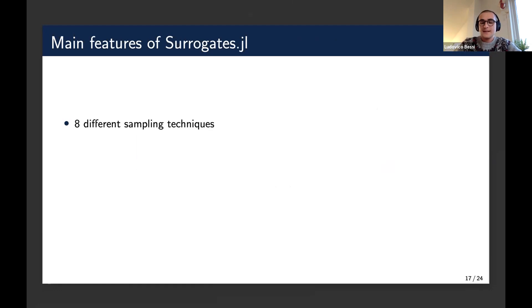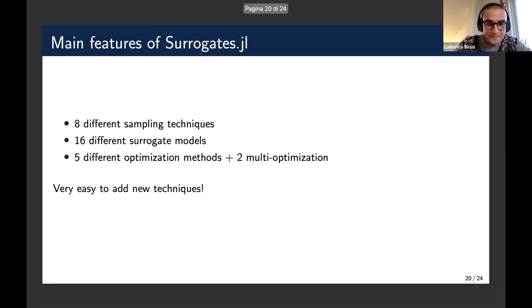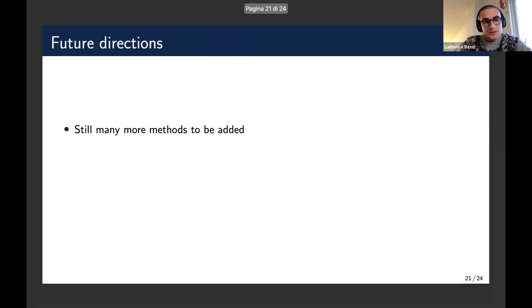All in all, there are eight different sampling techniques, 16 different surrogate models, and seven optimization methods. Five are just for single output optimization, and two are for multi-optimization. For example, here I've discussed the expected improvement method, and the RTEA optimization technique, which is for the multi-optimization problem. And it's very easy, by following the docs, to add new techniques, so that's good as well.